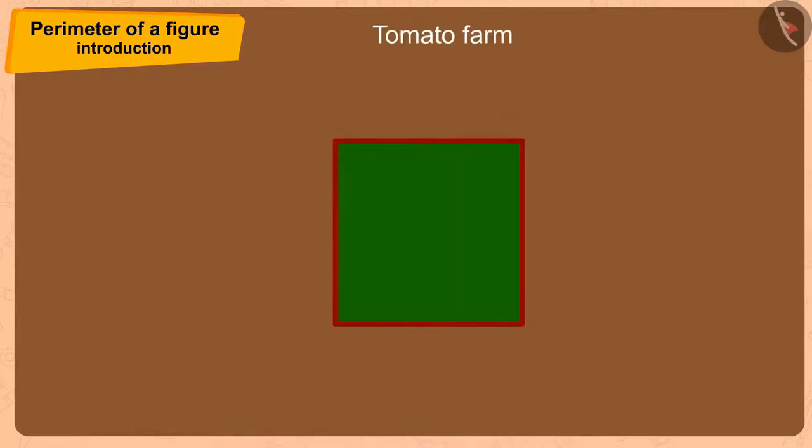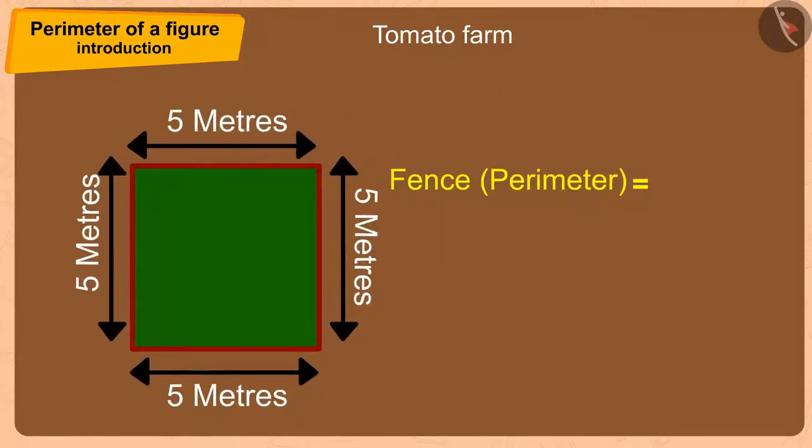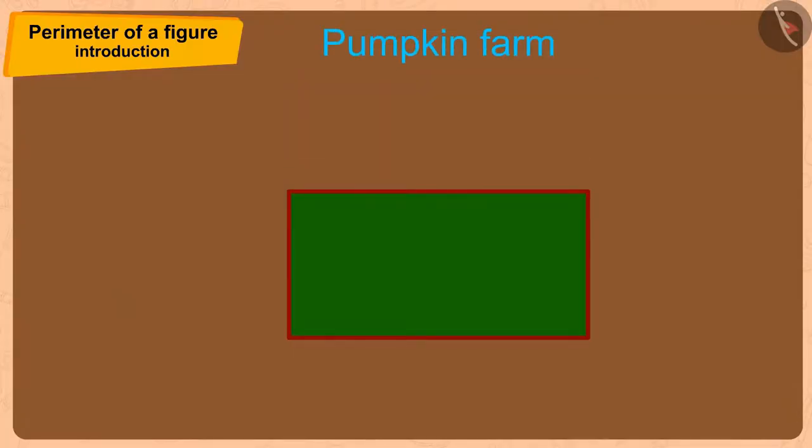Tomatoes are cultivated in a square-sized area, with each side being 5 meters in length. And because all the sides of the square are of equal length, the size of a square-shaped fence will be 4 times the length of the side. In this way, Bhola used 4 times 5 or 20 meters long wire to make a square-shaped fence.